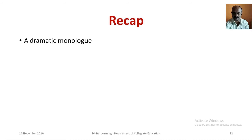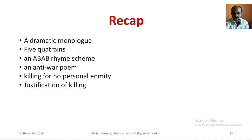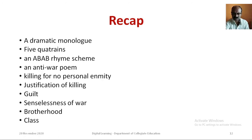Let us recapitulate what we have learnt in this session. The poem is a dramatic monologue in the voice of a returned soldier. This poem has five quatrains having an ABAB rhyme scheme. This is an anti-war poem. There is no personal enmity between the speaker and the man he killed. Even though the speaker tries to justify shooting the man, there is a feeling of guilt in him. This shows the senselessness of war. Brotherhood and class are also some other themes of the poem.